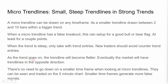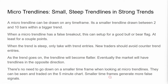As the trend goes on, the trend line will become flatter. Eventually the markets will have trend lines in the opposite direction. There's no need to go down to a smaller time frame when looking at micro trend lines — they can be seen and traded on the five-minute chart. Smaller time frames generate more false signals.